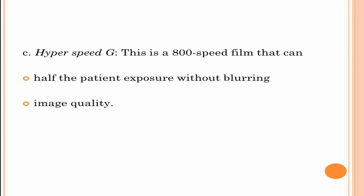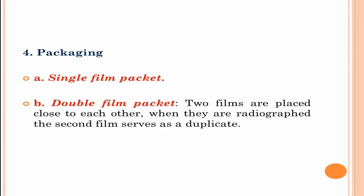Based on packing, it is classified into single film packet and double film packet. In single film packet there is only a single film in one packet, whereas in double film packet two films are placed close together. When radiographed, the second film acts as a duplicating film.